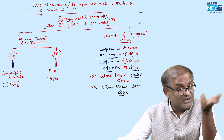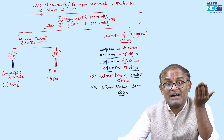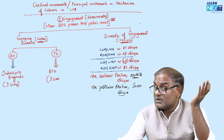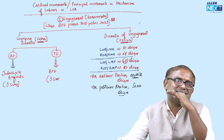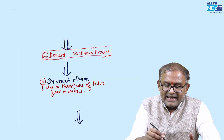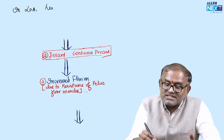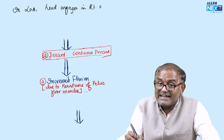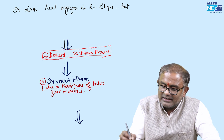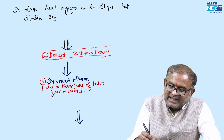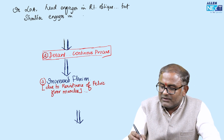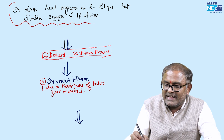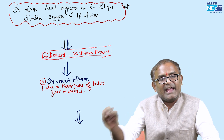The diameter of engagement is very important — questions come from this topic. Previously questions asked to arrange the cardinal movements in order, but now the question quality is more difficult. In LOA, the head engages in the right oblique, but the shoulder engages in the left oblique.